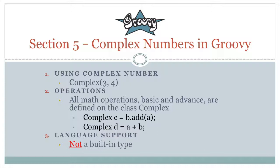JVM languages do not have complex numbers built-in, and this is true in Groovy also. But we're going to be able to use complex numbers in a way that makes them look like they're built-in — specifically we'll be able to say `a + b` using the plus operator, just like in Go, C, or C++, even though we can't do that in Java.